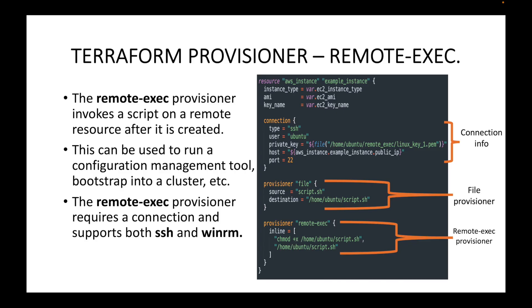This is what remote exec does — whenever you want to execute some commands or scripts on the remote machine or on a new resource created by Terraform, we can use remote exec. This completes the Terraform provisioner series. To summarize: local exec is for executing something on the local machine, the file provisioner is for copying files to remote machines, and remote exec is for executing commands or scripts on the remote machine. That's it for this session, thank you. Please subscribe to the channel, leave a like, and share the video.